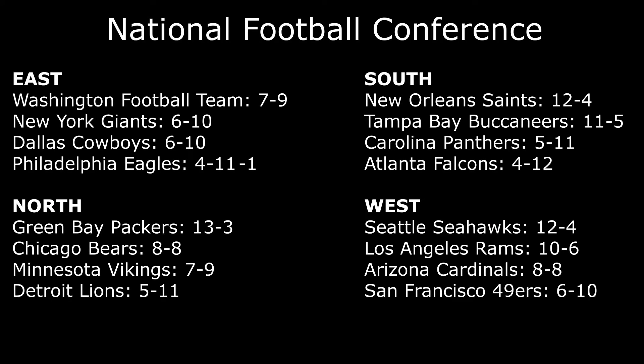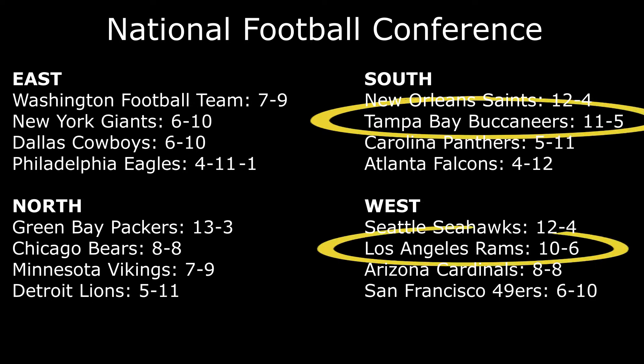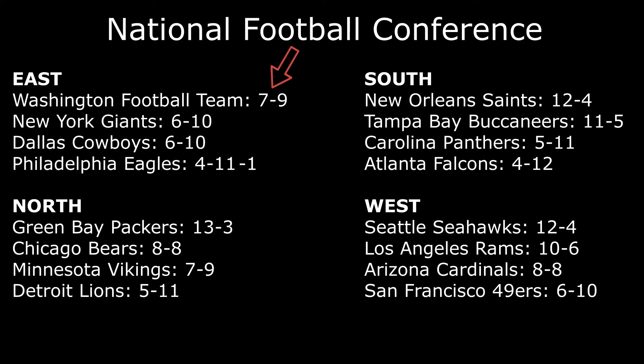Remember, the top team from each division gets to go to the playoffs. Then they look at all the remaining teams — no matter what division they're in, within that conference — and they pull the top three records from the remaining twelve teams. It doesn't matter what division they're in; they go by record for seeds five, six, and seven. This is how a seven-and-nine Washington team was ranked higher than the ten-and-six Tampa Bay Buccaneers.